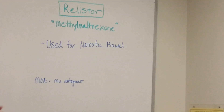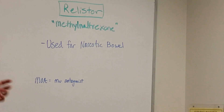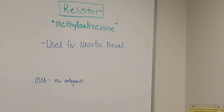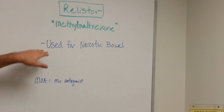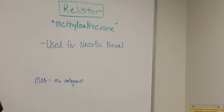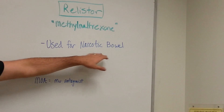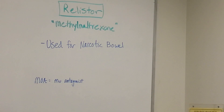Let's quickly talk about the drug Relistor, also known as methyl naltrexone. Naltrexone is a drug used for opioid reversal. Relistor, on the other hand, is going to be used for narcotic bowel syndrome — constipation caused by opioid drugs, such as painkiller medications or any kind of narcotic like heroin addiction.